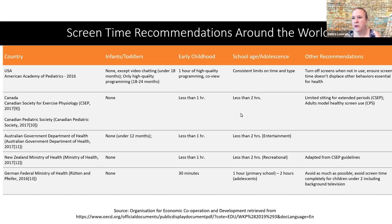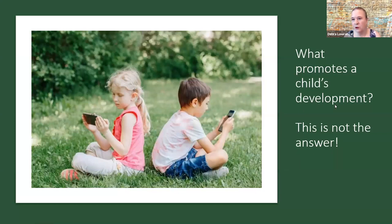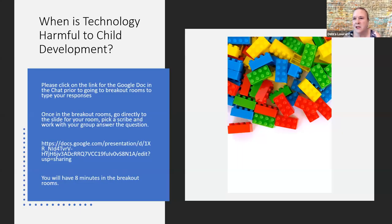One educator shared: 'We don't use technology very frequently, but on the rare occasion we show a video, you see kids go from being active and engaged little people to immobile lumps on the carpet.' Technology is passive learning in most cases. What promotes a child's development — I don't think it's screens. We need to get back to our roots, to what theorists taught us about child development. They observed children develop without screens — so what was it in their research that demonstrated how children learn?